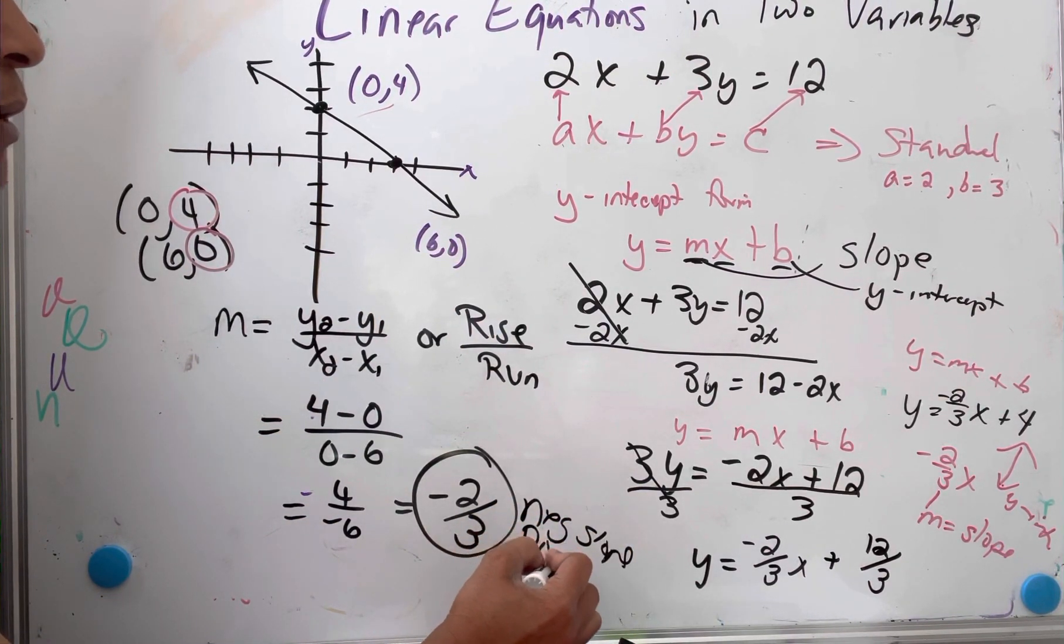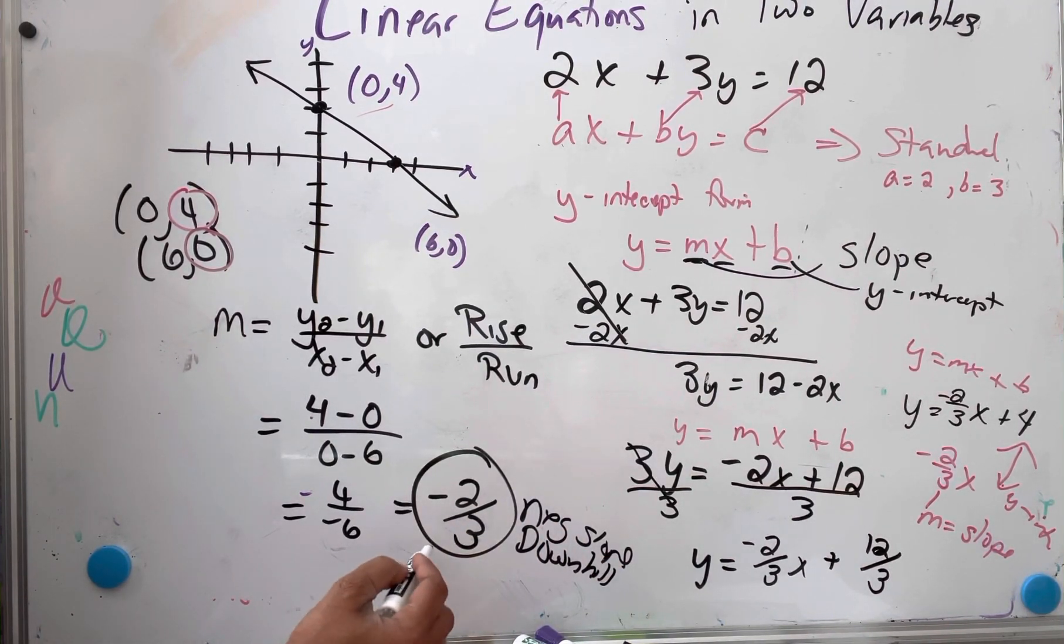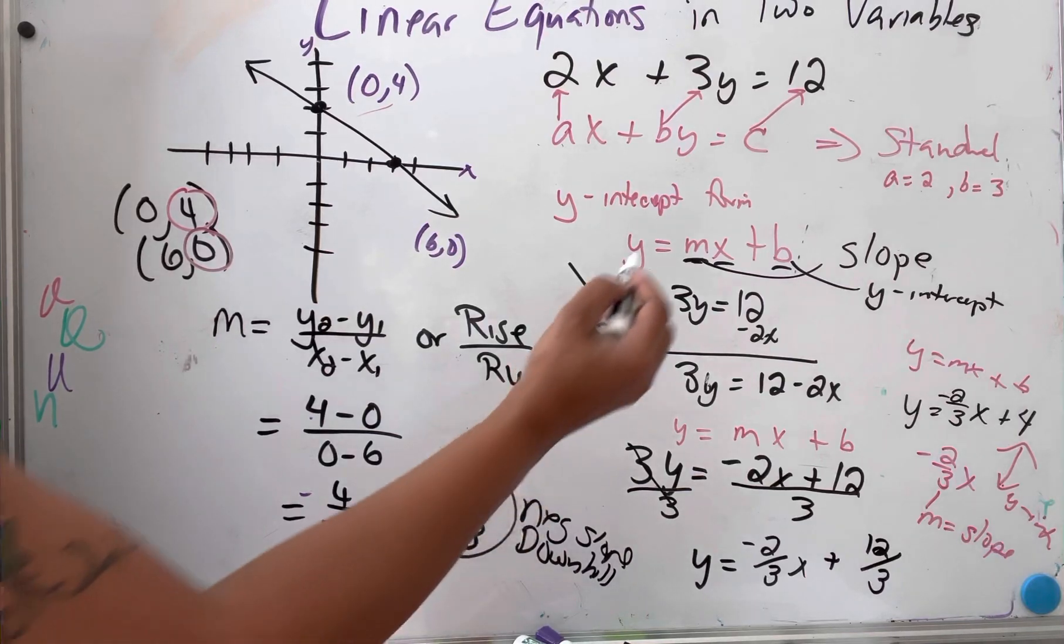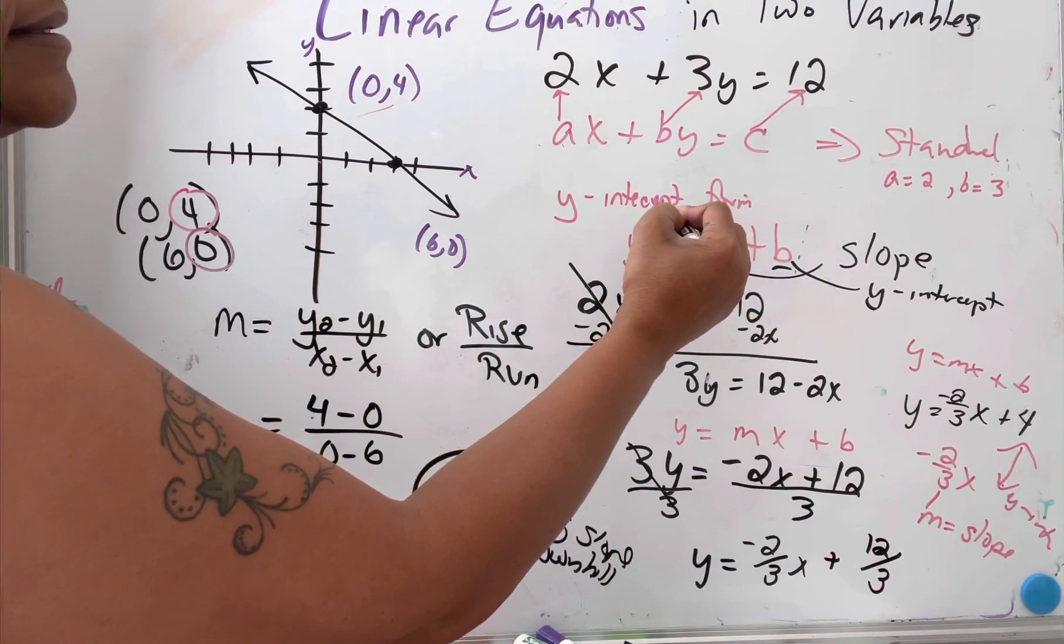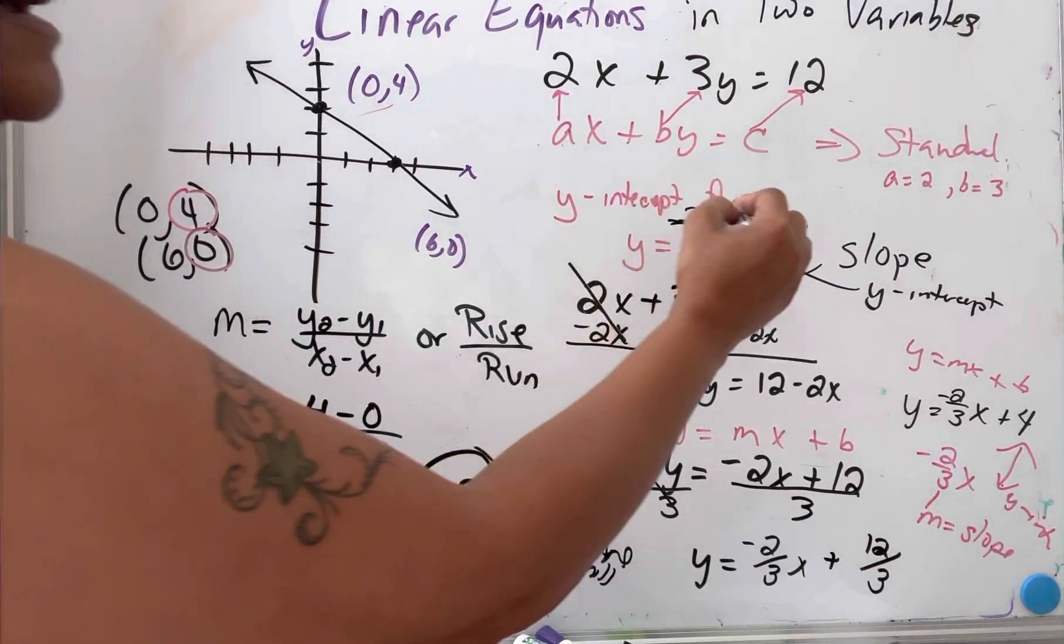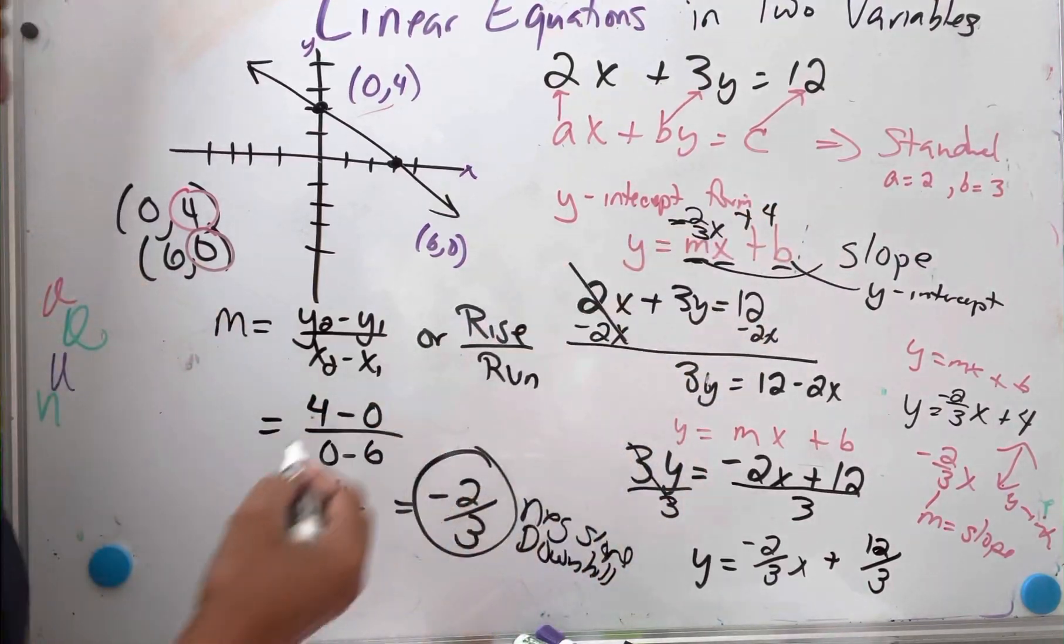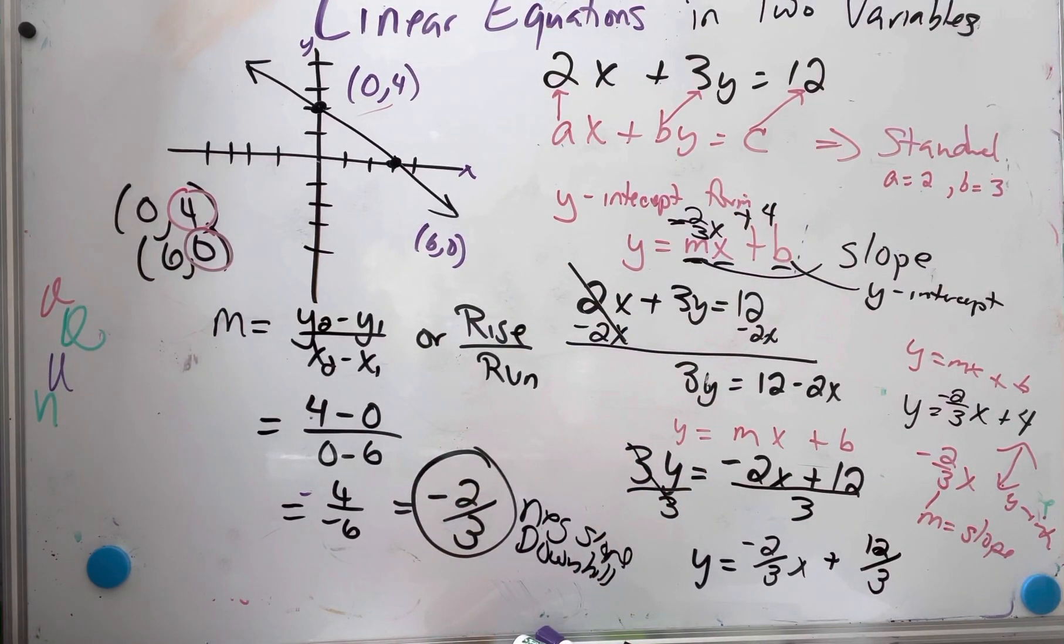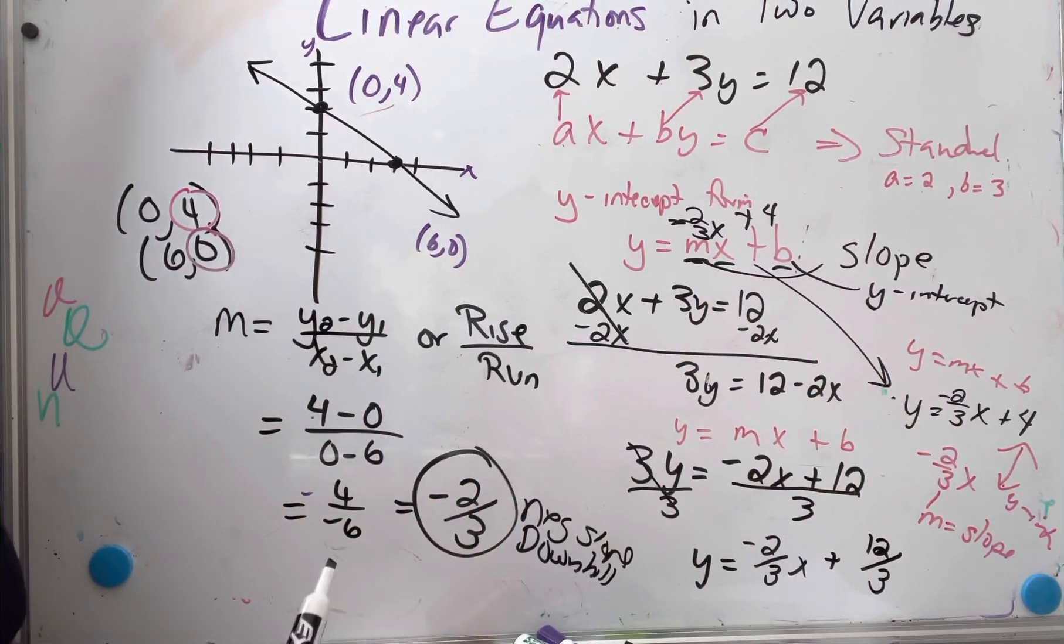Now if I had to write the equation, I would simply put negative 2/3x, I would look at my graph and see 4 here and put 4 for b, and I'm done. It's the same thing I have here. Quick review.